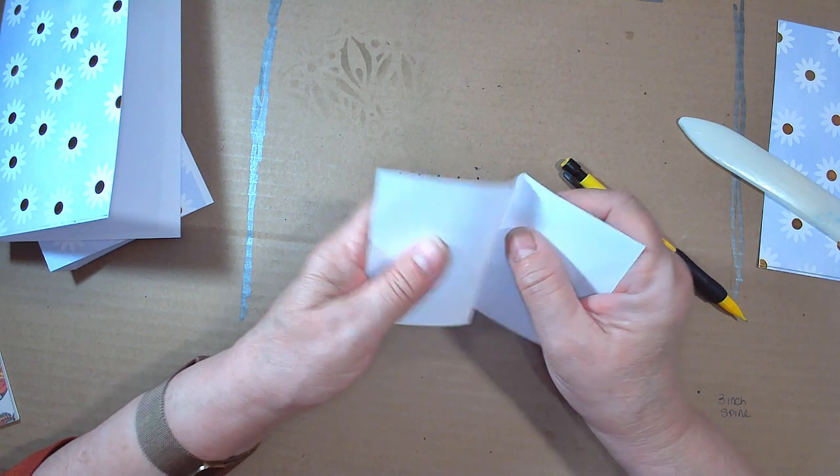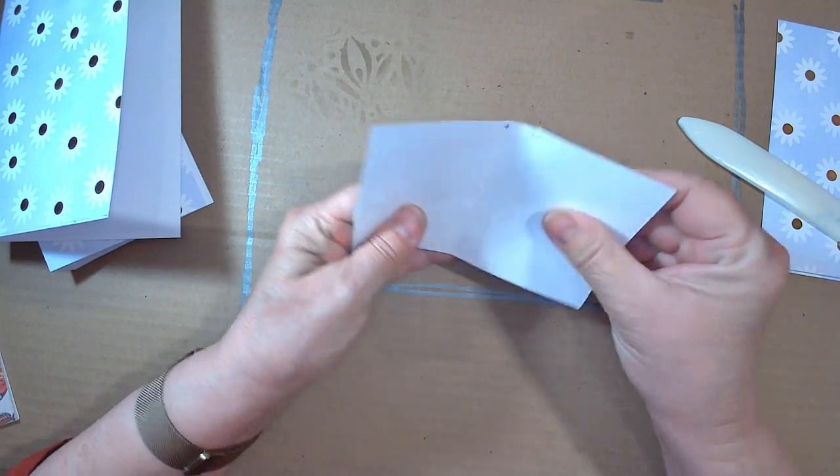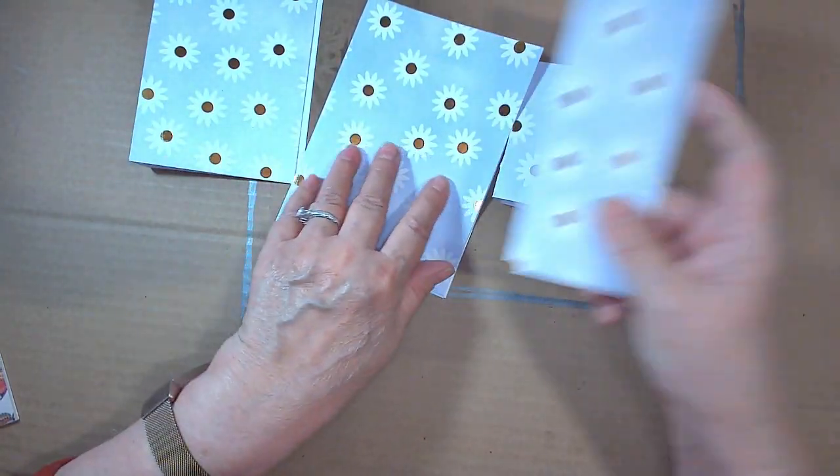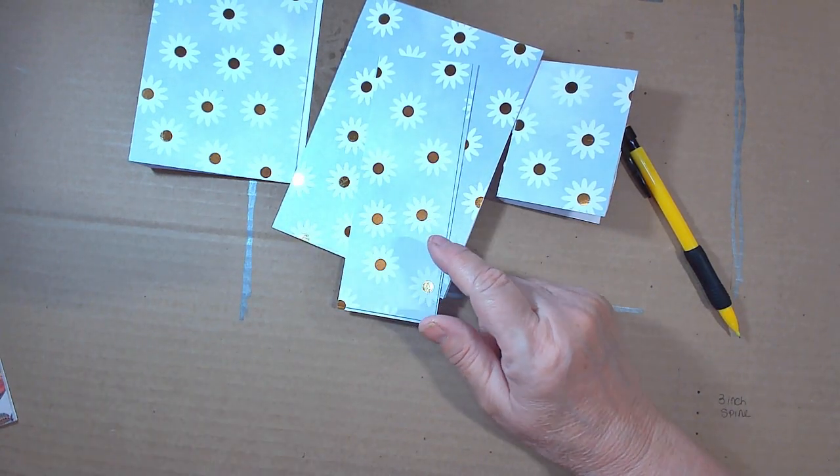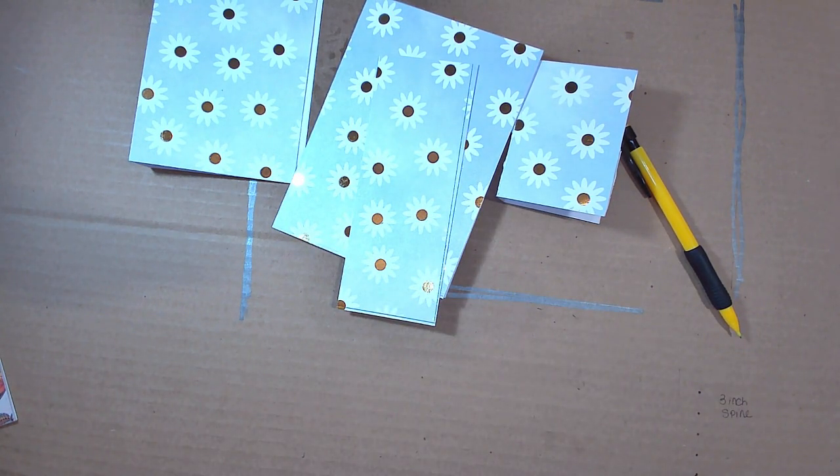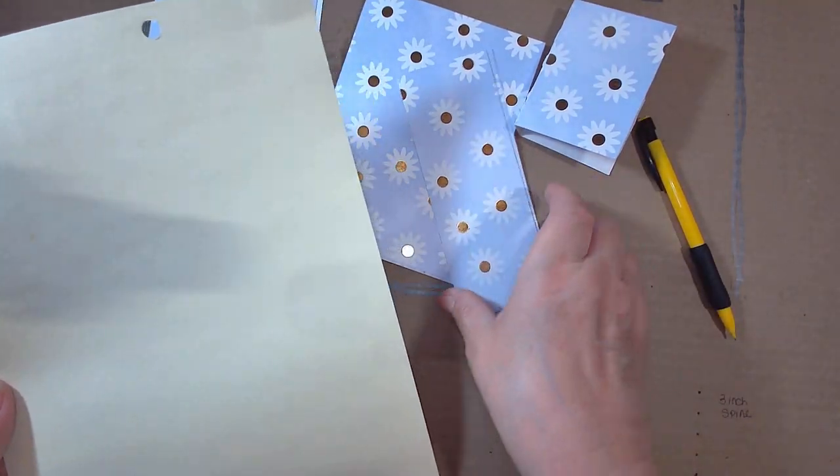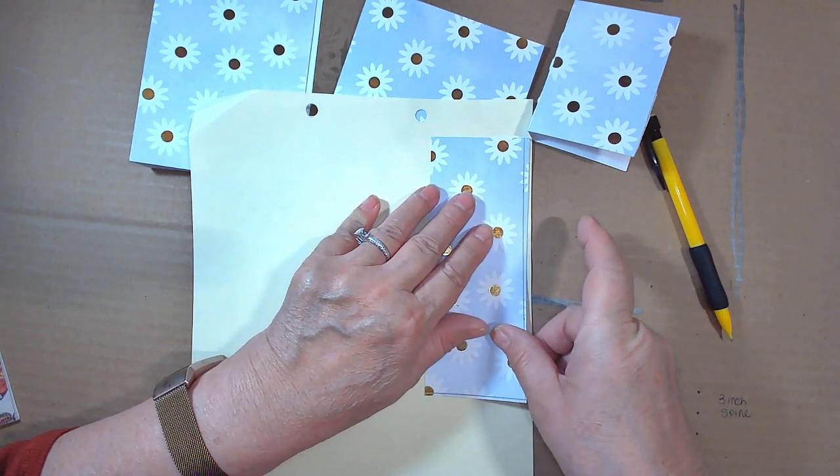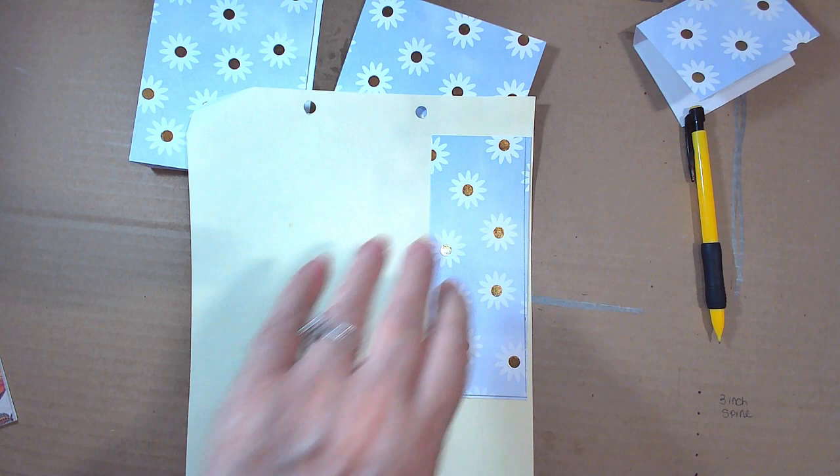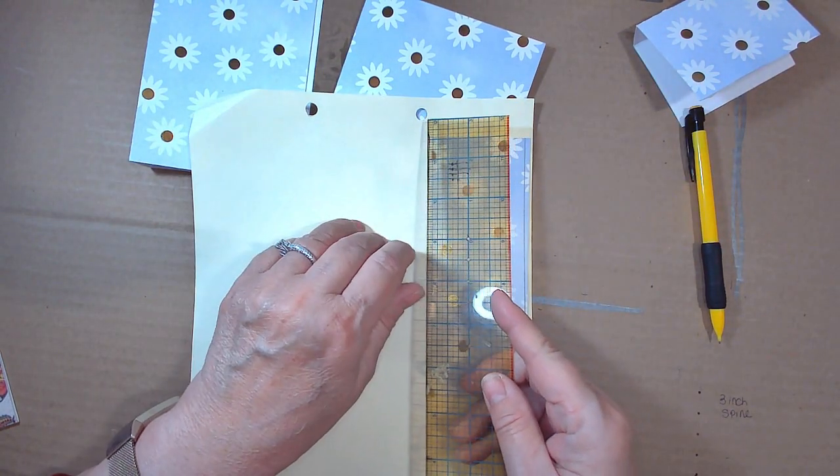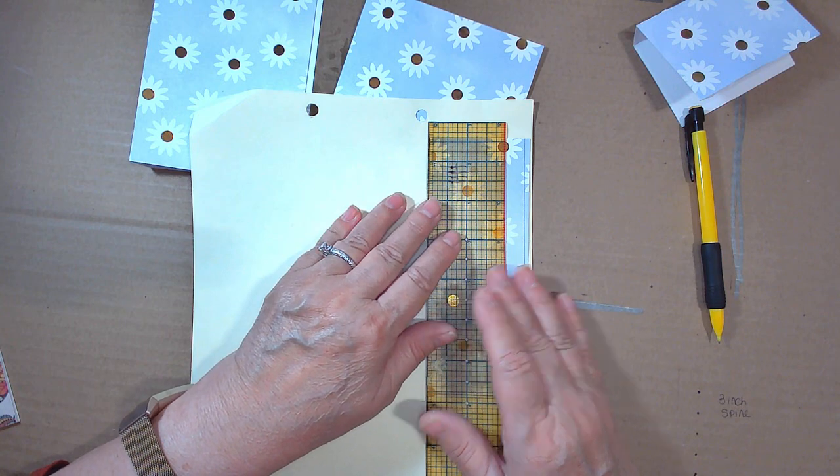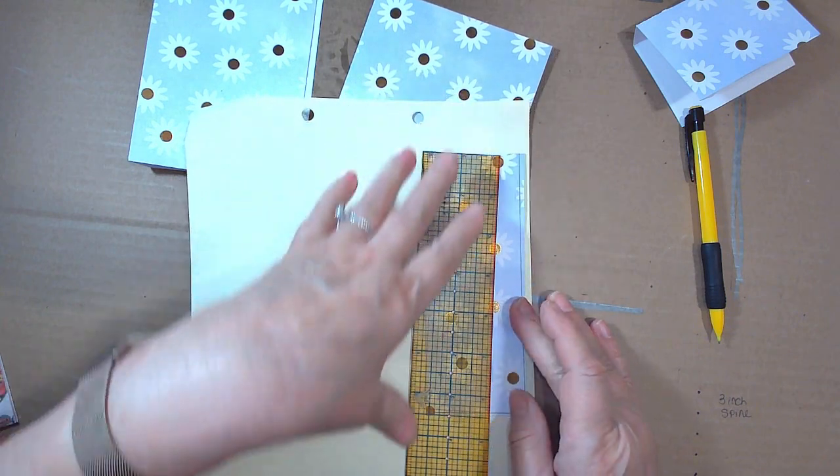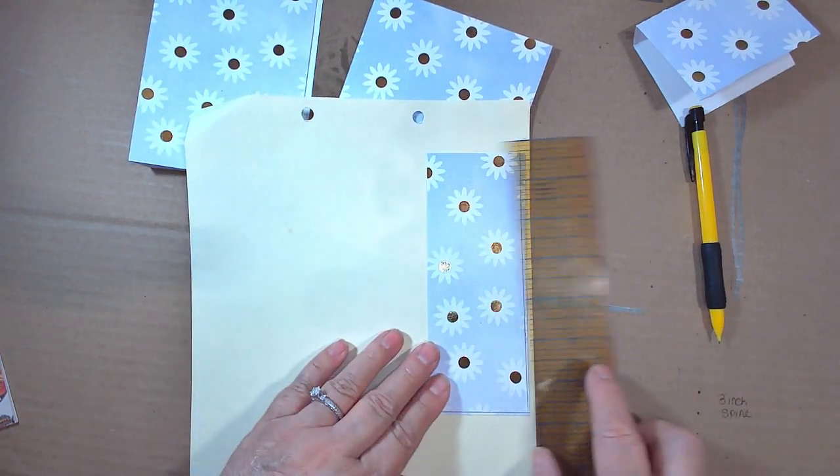This one will be filled with maybe you want to use it as an address book, phone numbers, appointments, you know it will be up to the owner. Make sure it's straight. Now you're going to need a backing for this bookmark, and it doesn't have to be anything special, it can be just a piece of paper, and you're going to want it slightly wider than what you're using.